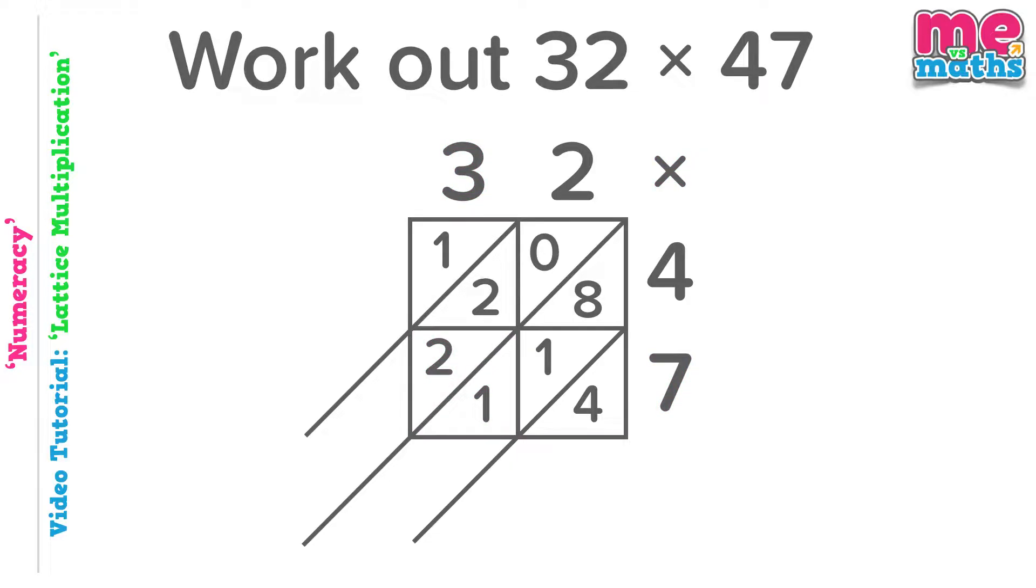We've done all our multiplication so it's time for the addition. Starting with the diagonal furthest to the right, the one in the bottom right hand corner, this column just has a 4 in it, so that's easy. Our next diagonal has 3 numbers in it: 8, 1 and 1, so they total 10. As in our previous example, we'll leave the 0 and carry the 1 to our next diagonal column. This means our next sum actually has 4 numbers that we need to add: 0, add 2, add 2, add the carried 1, makes 5. And lastly, we just have a 1 in the last diagonal. So our solution, 1,504.